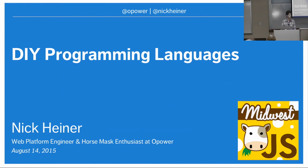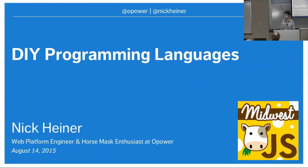Welcome everyone to the post-lunch food coma section of the conference. I hope all the breadsticks are sitting in your belly nicely and you'll be fully awake throughout this talk. My name is Nick. I'm a web platform engineer and horse mask enthusiast at Opower. Opower is a mission-driven company trying to save the environment by sending people personalized communications about their energy usage and convincing them to use less energy. So far we've prevented over six million tons of CO2 from entering the atmosphere, equivalent to taking a million cars off the road for a year.